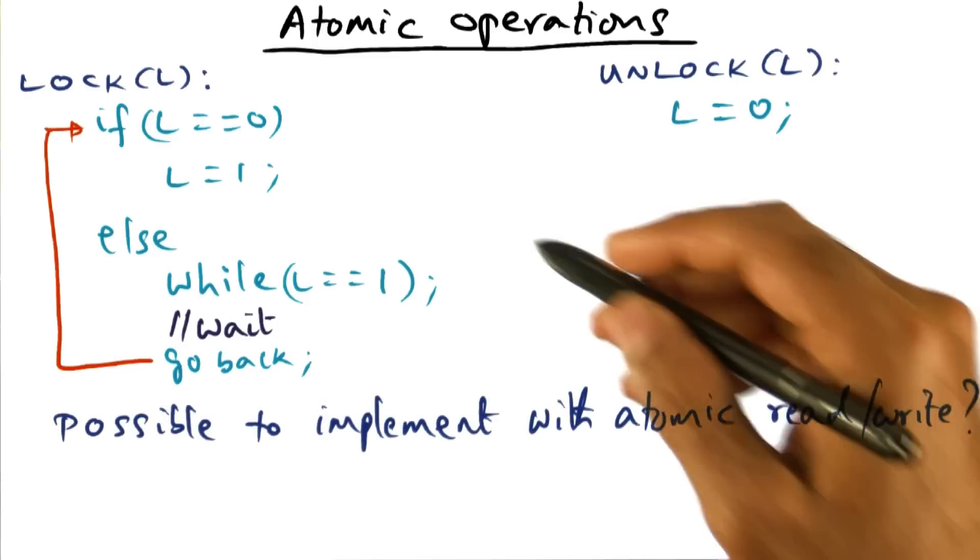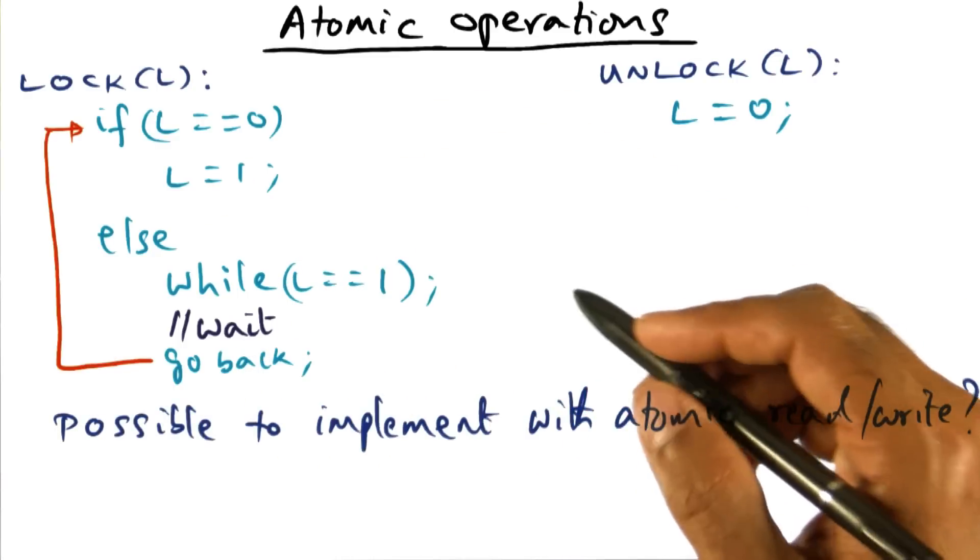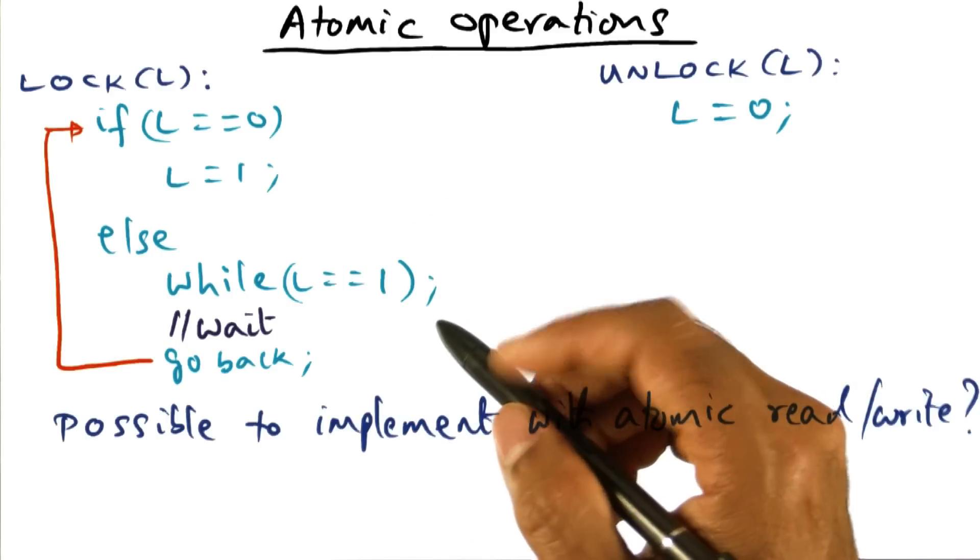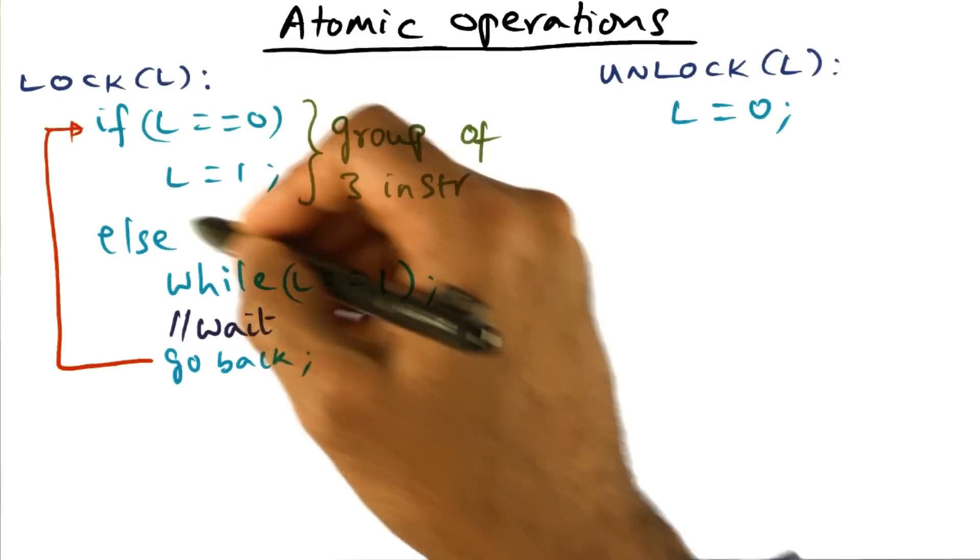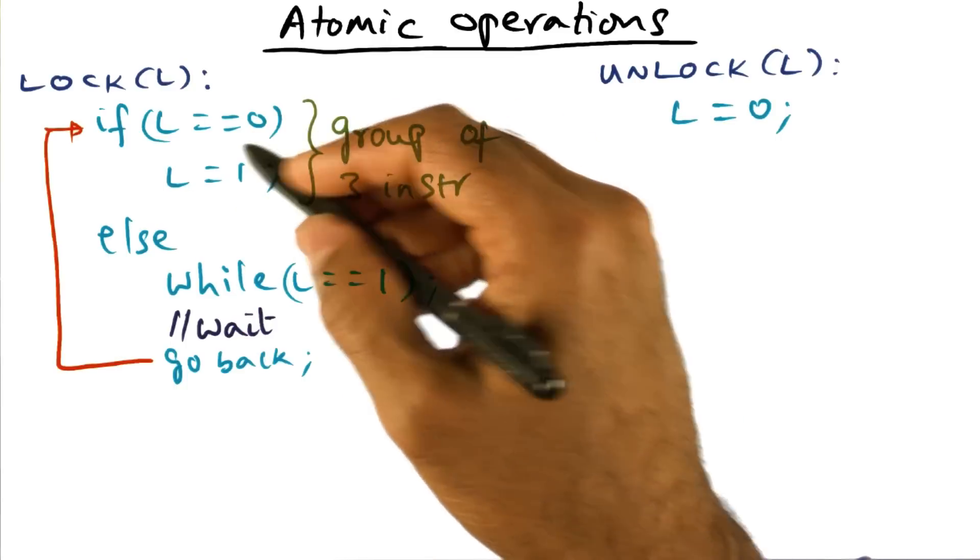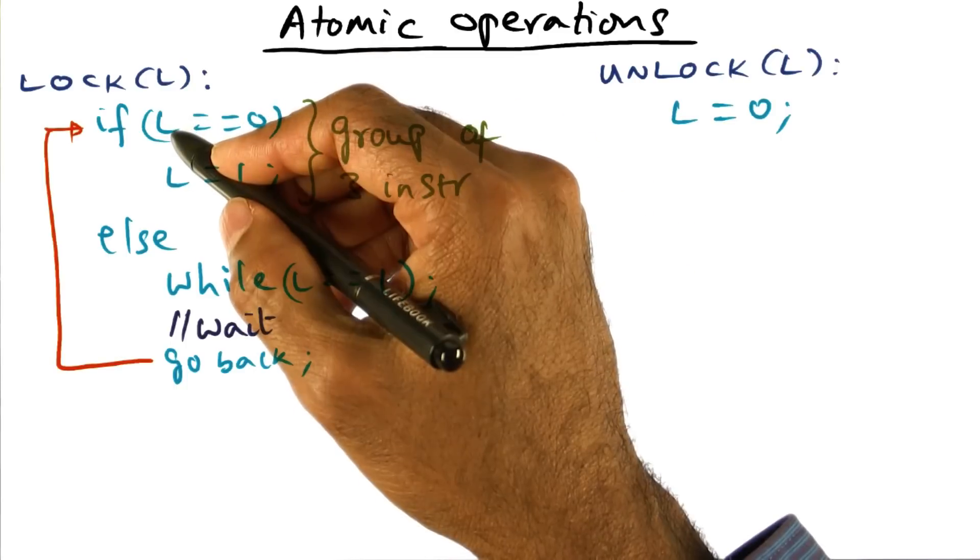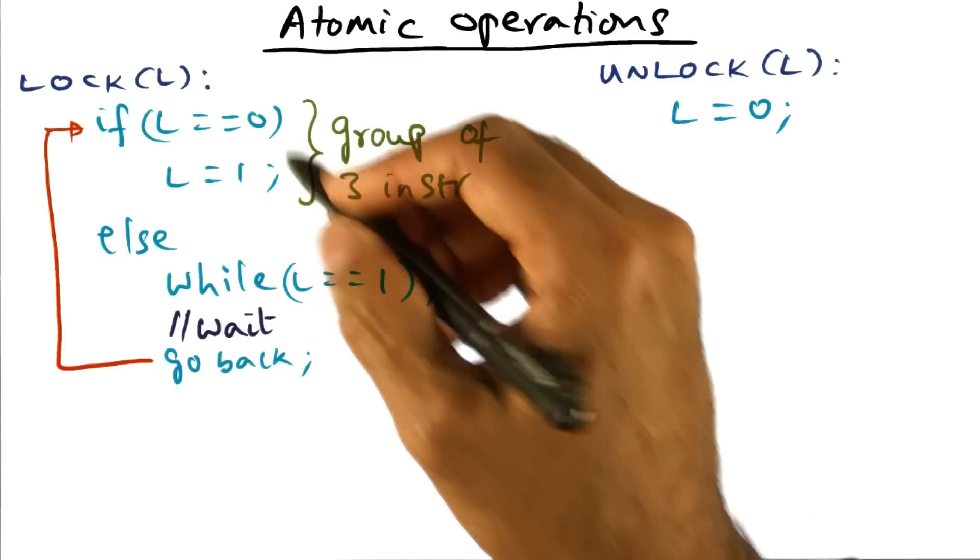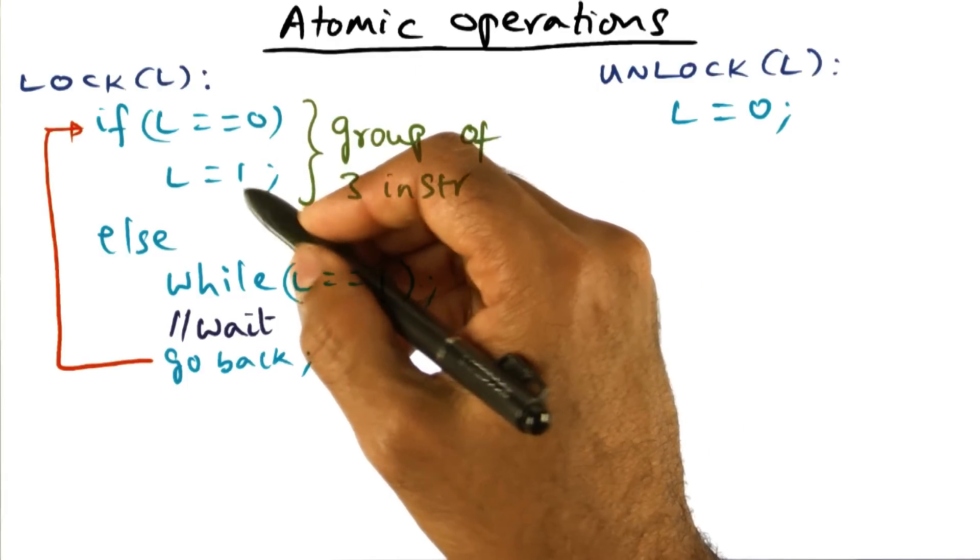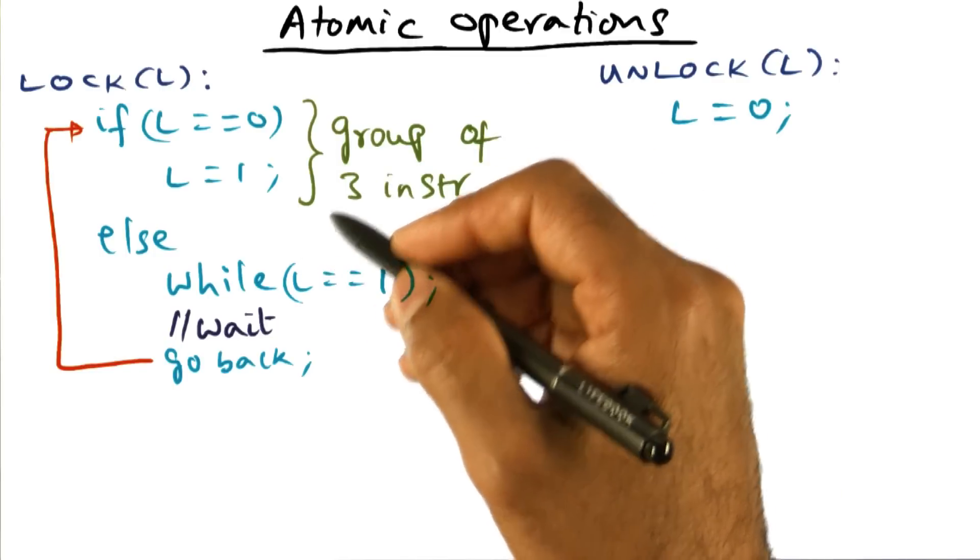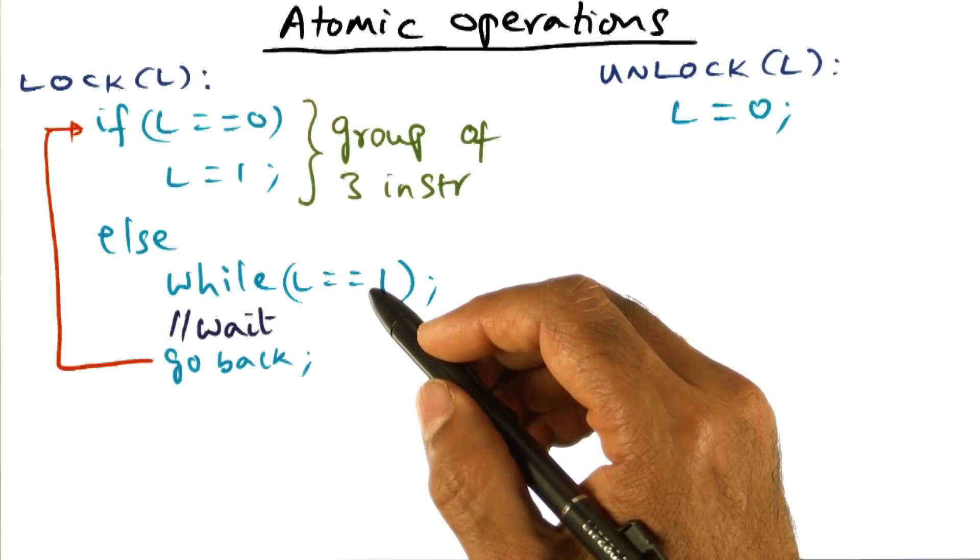Is it possible to implement the simple-minded implementation of the lock using atomic reads and writes alone? Let's talk through this implementation here. Now if you look at this set of instructions that the processor has to execute in order to acquire the lock, it has to first read L from memory, and then check if it is zero, and store that new value, which is one, into this memory location.